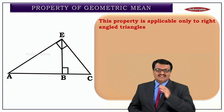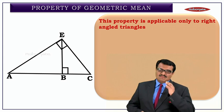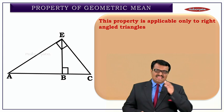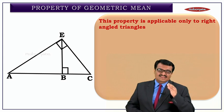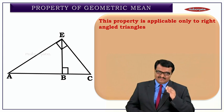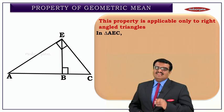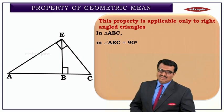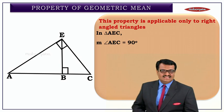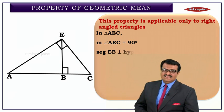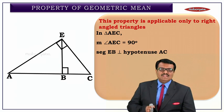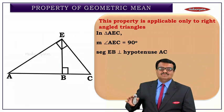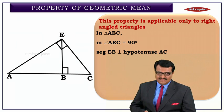This is a right-angled triangle; the name of the triangle is AEC, and it is right-angled at E. In triangle AEC, the measure of angle AEC is 90 degrees, and EB is perpendicular to the hypotenuse AC.